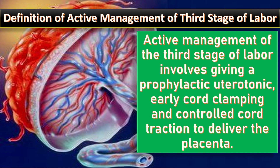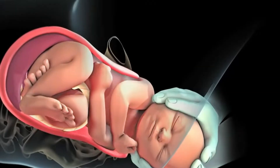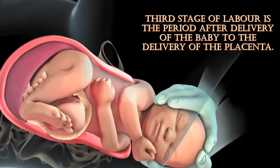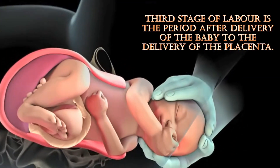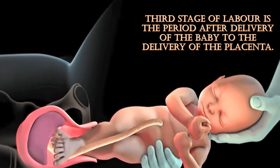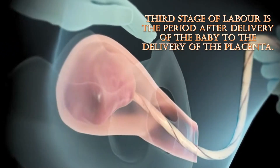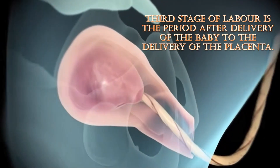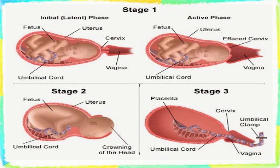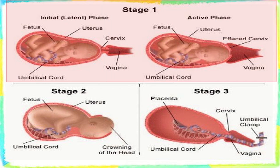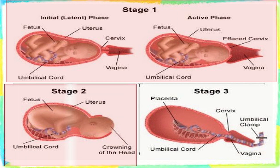The third stage of labor is the period after delivery of the baby to the delivery of the placenta. The first stage is when the cervix is opening and the baby is moving down the birth canal. The second stage is when the baby is being born, and the third stage is when the placenta is delivered.